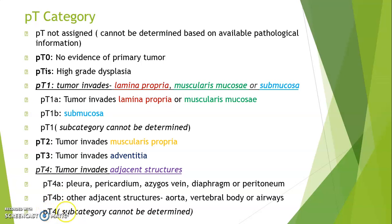PT4 is assigned when the subcategory cannot be determined. In summary for esophagus: PT0 — no evidence of primary tumor; TIS — in situ; T1 — up to submucosa; T2 — muscularis propria involved; T3 — adventitia involved; T4 — adjacent structures also involved.